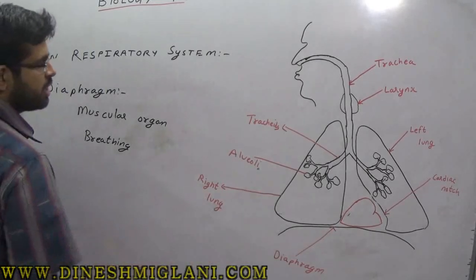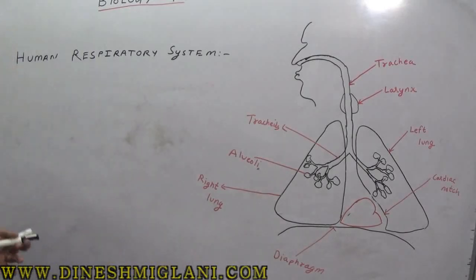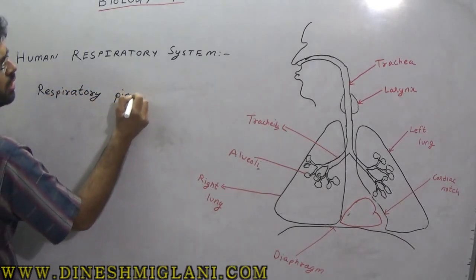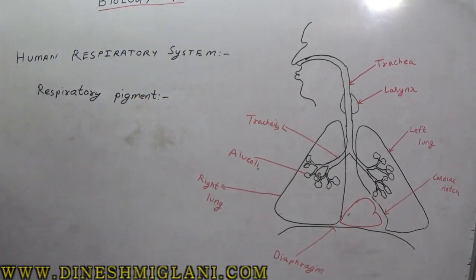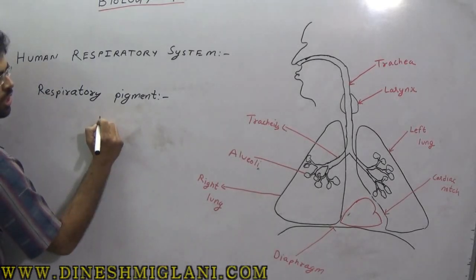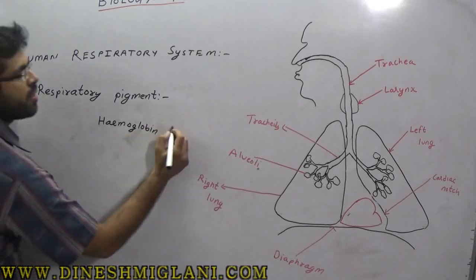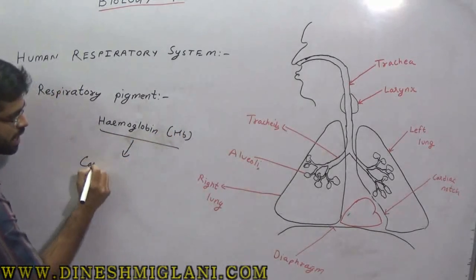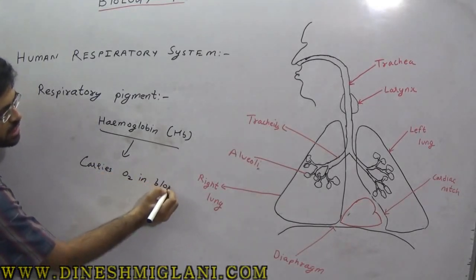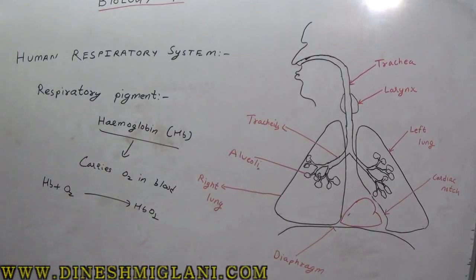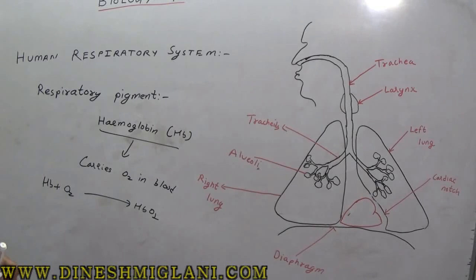When the lungs are full of air, the diaphragm contracts, reducing the chest cavity and pushing air out. When air is expelled, it relaxes and the lung capacity increases, allowing air to enter the body. This is how our continuous state of breathing is maintained. The diaphragm controls the volume of the thoracic cavity.